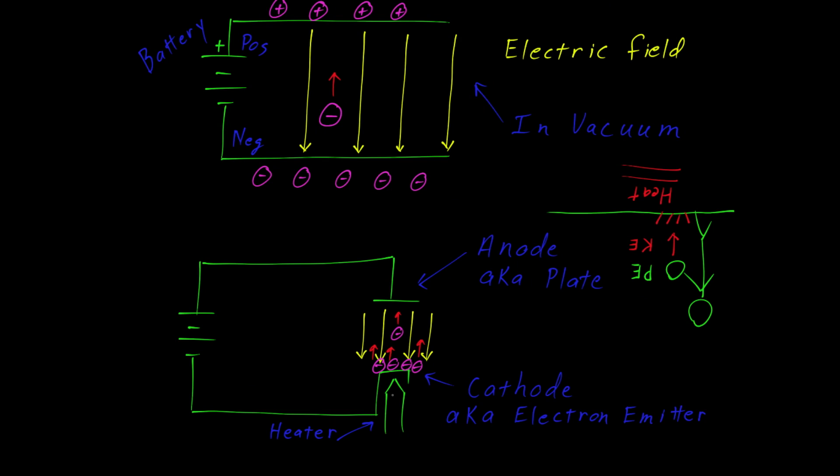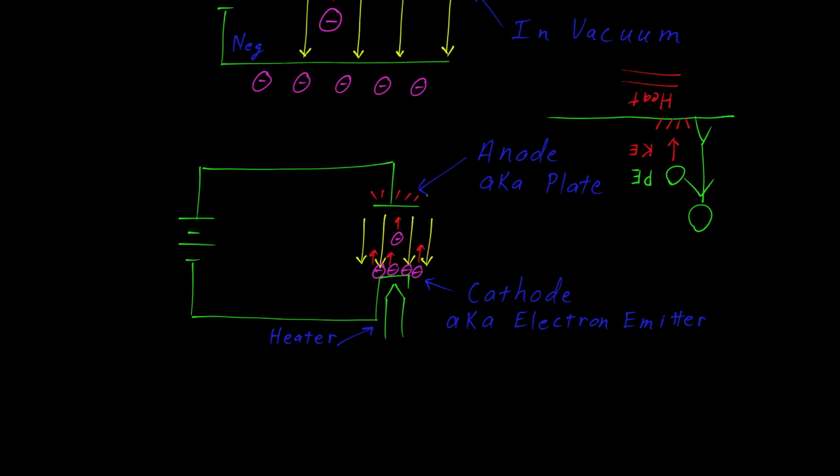When the electrons strike the anode, the kinetic energy is turned into heat. And so the plate gets hot.